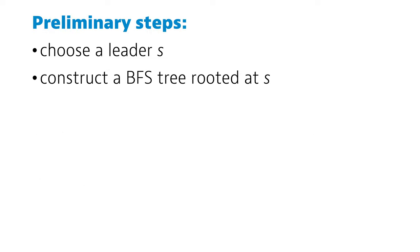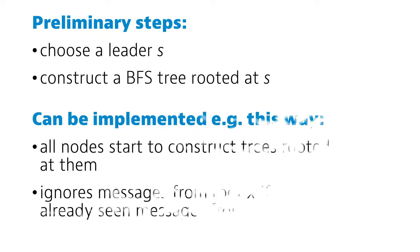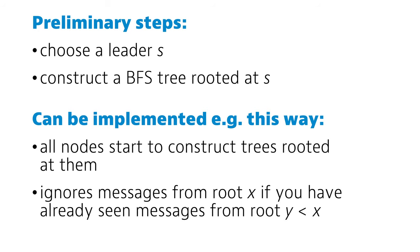We first pick a leader S, and construct a tree rooted at S. This is pretty easy to do fast in the congest model, as we can for example first find the node S with the smallest identifier, and then initiate a wave from S to form the tree. There is a neat way to do both of these in one step.